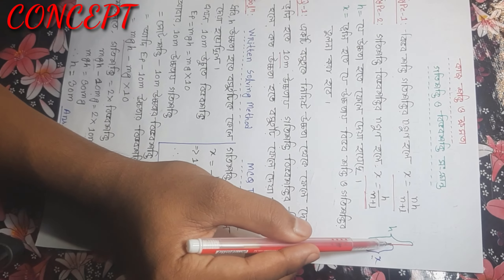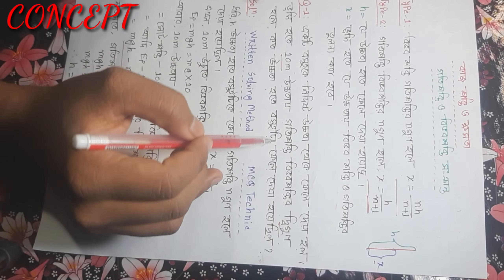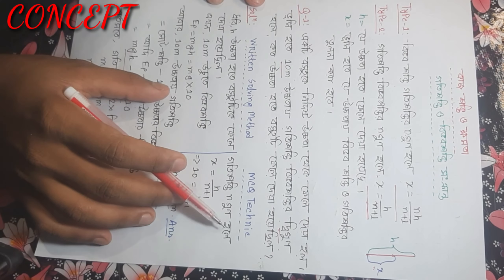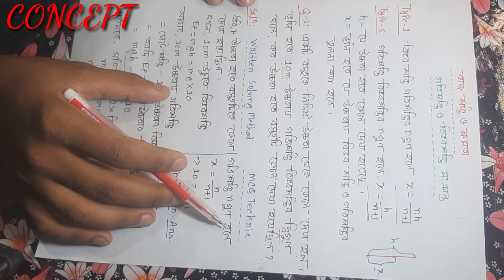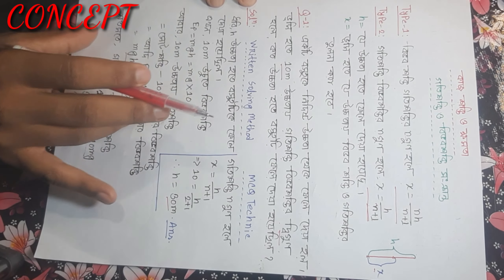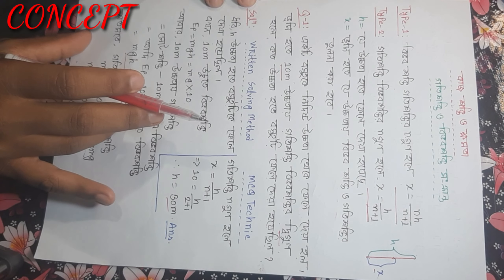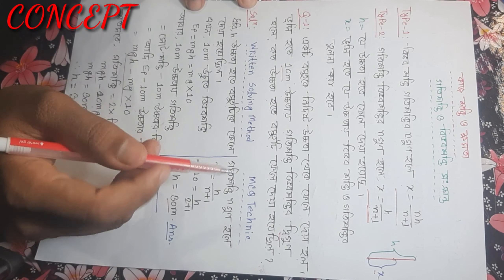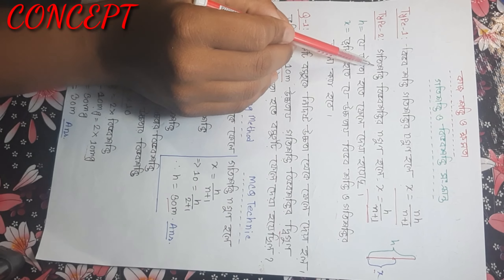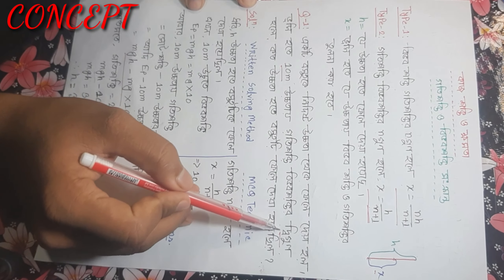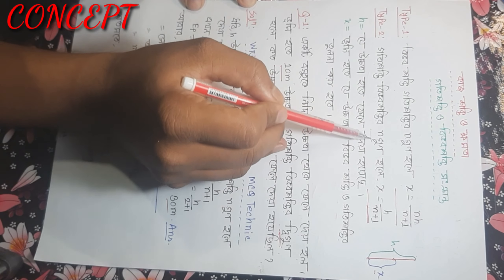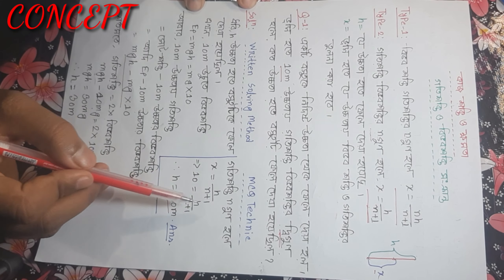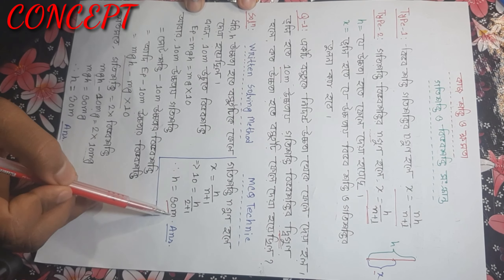This is the 3m part, which takes 4m of the body and gives back the body. Let us see this in the first step. This is the technique. The technique is the 3m part and the body is the 4m part, so it is the 3m part.